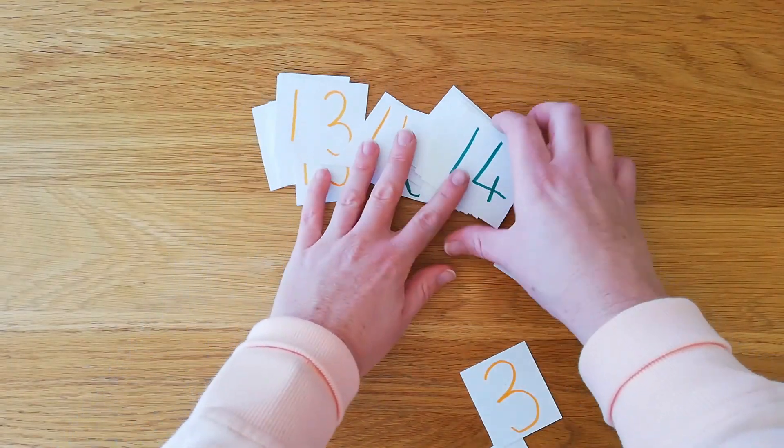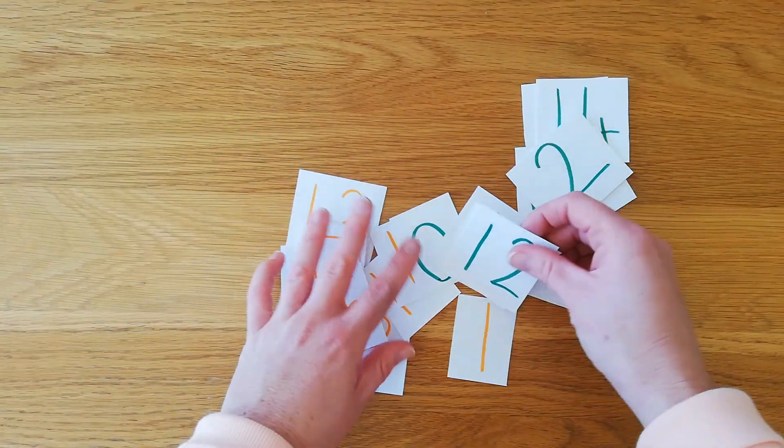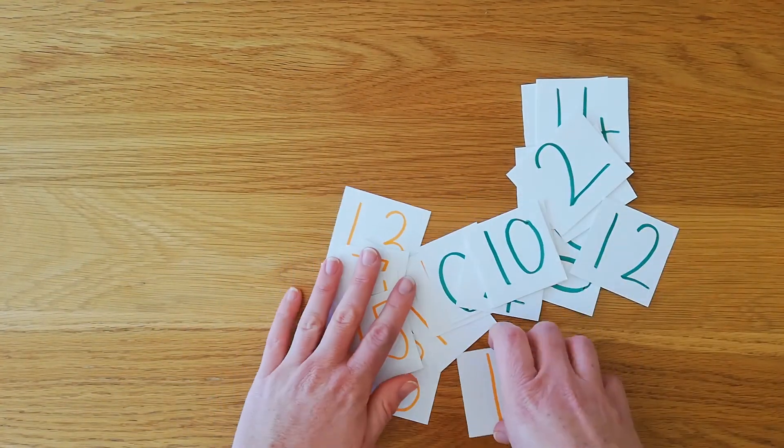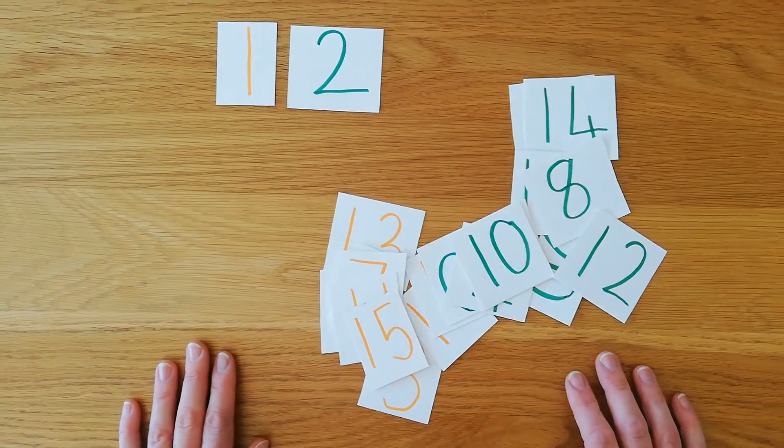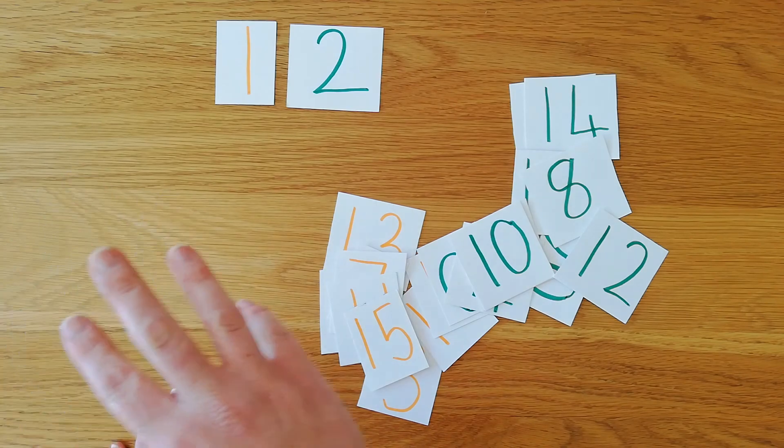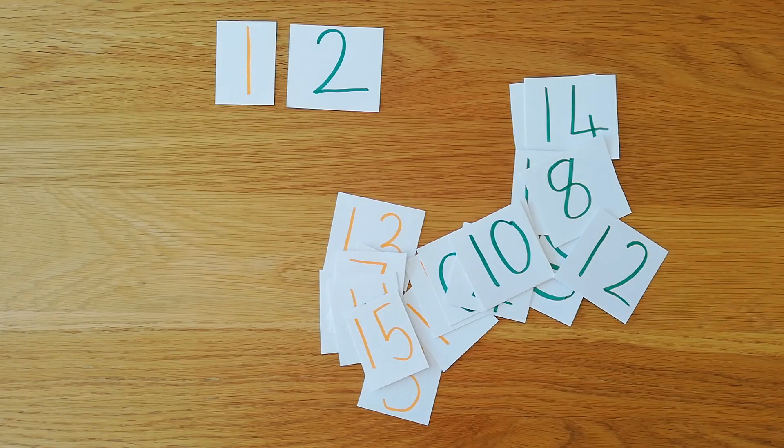Well done. Now once you've practiced all the numbers, you can put your cards out onto a table or the floor, wherever you're sitting, and you can put them in order. You can start at number 1 and keep going on, or you can count backwards and start at number 20 and put them counting backwards from 20 to 1. Enjoy!